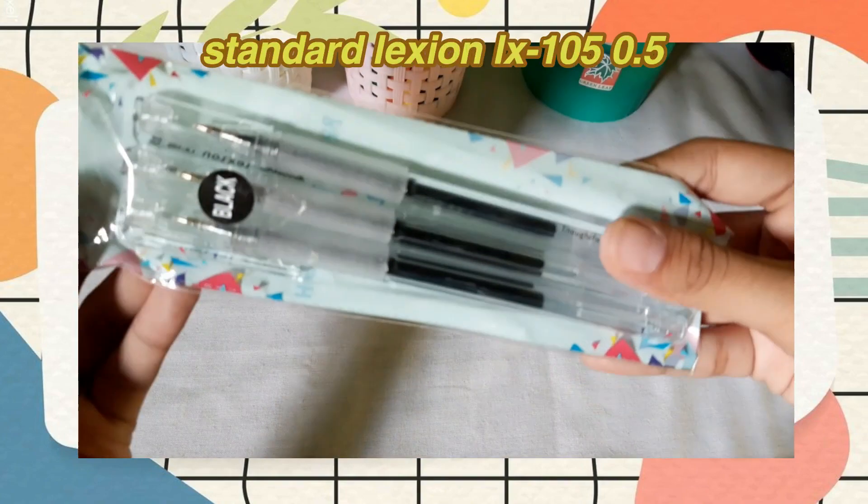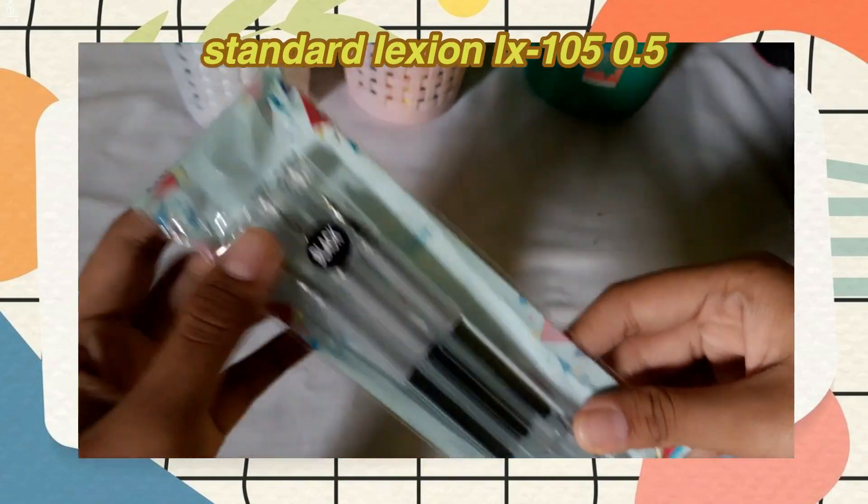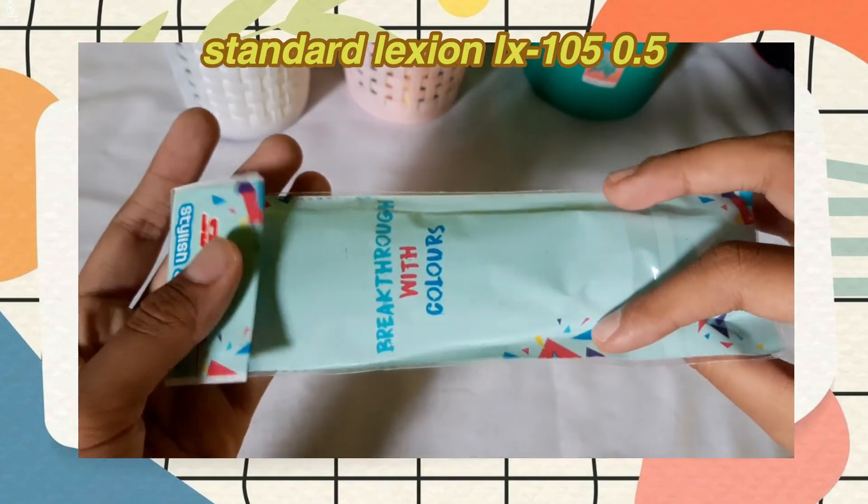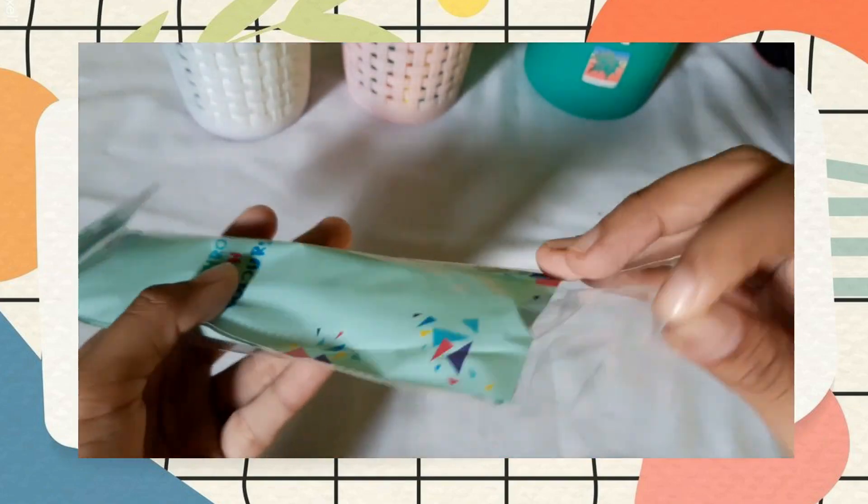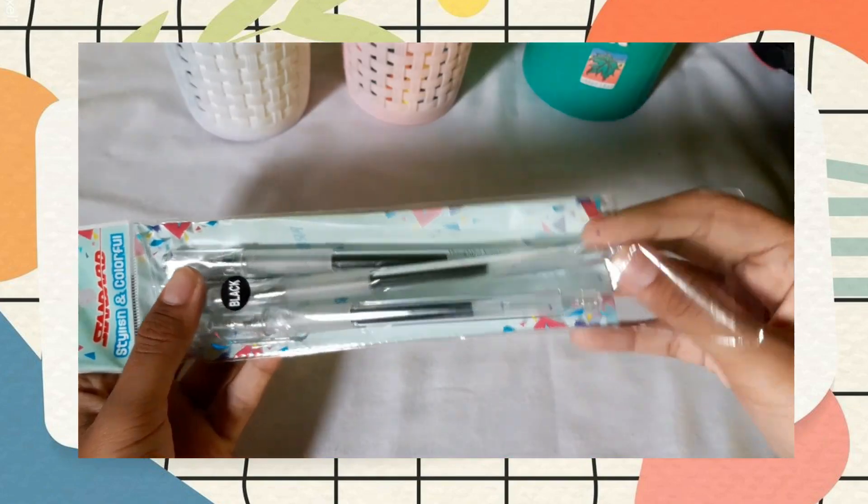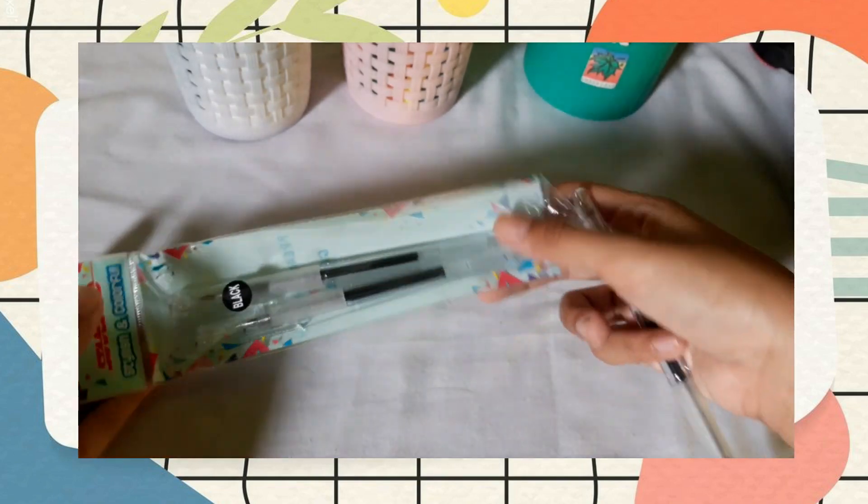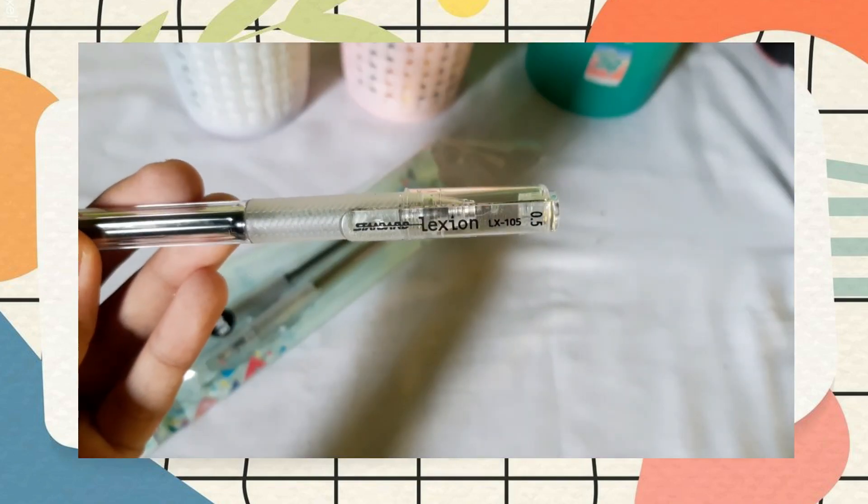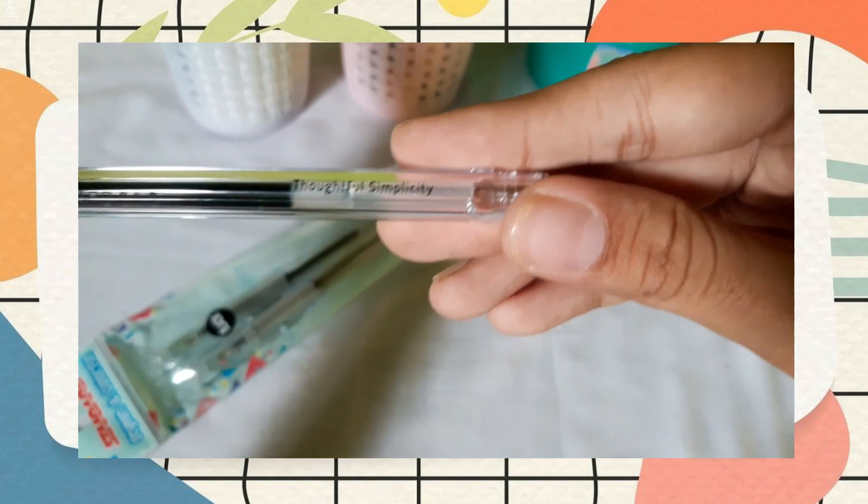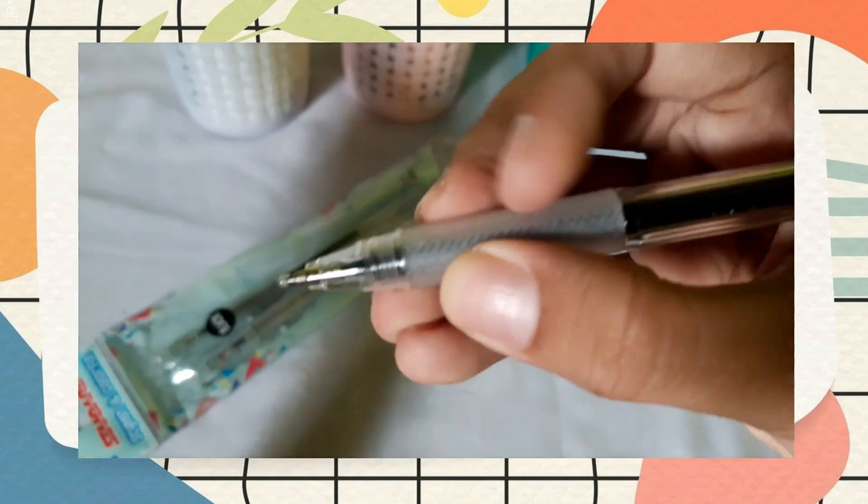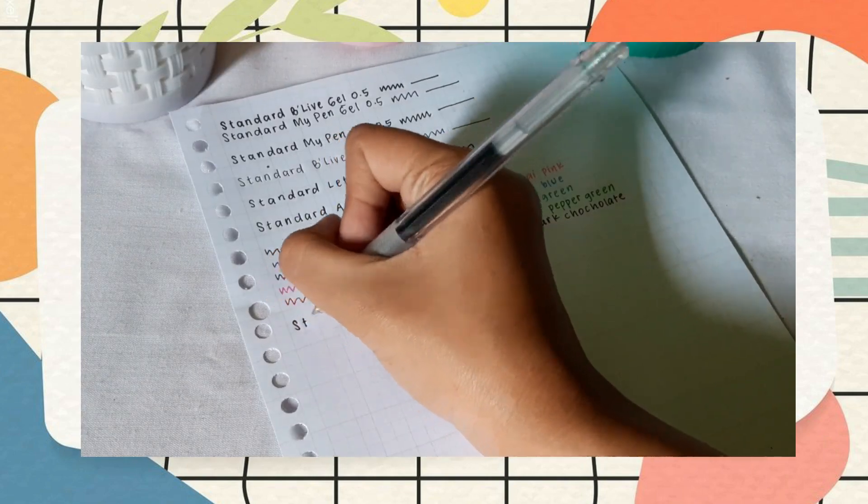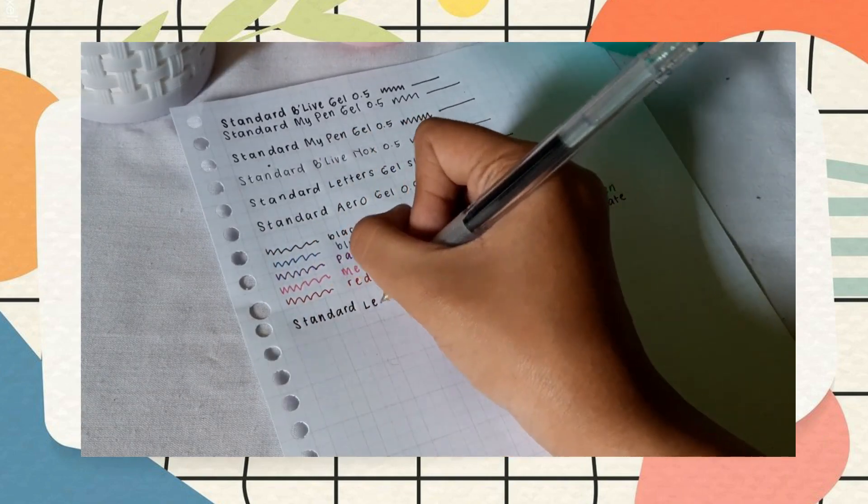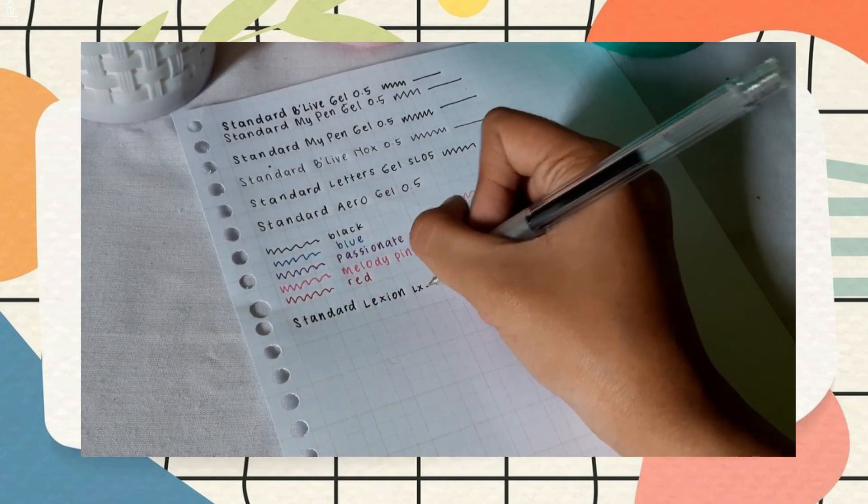Next, ada Standard Lexion LX105 0.5. Packagingnya lucu banget dan ada tulisan breathe truth with colors di belakangnya. Jadi ini tuh pulpen gel ukuran 0.5mm. Dia juga ada gripnya gitu, tapi teksturnya ini lebih keras. Pas di swatch, seperti pulpen gel biasa, tintanya smooth gitu dan gak macet juga.